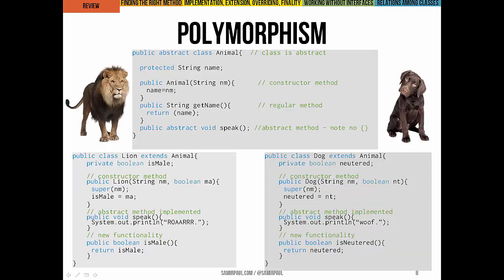Here again we see our abstract class Animal and two subclasses: Lion and Dog — both concrete classes, meaning we can make instances of them. We inherit the name instance variable, but we also add a boolean isMale for Lion, and a boolean neutered for Dog. Their constructors behave predictably, we have getters for the new boolean variables, and we've also implemented the abstract method speak that was declared in Animal.